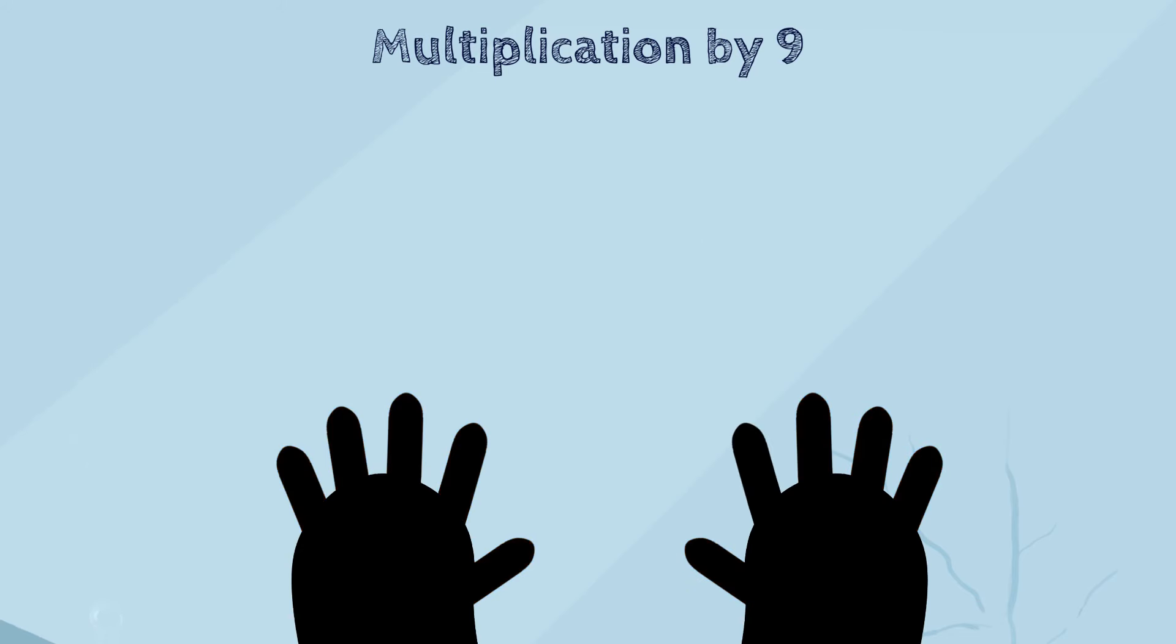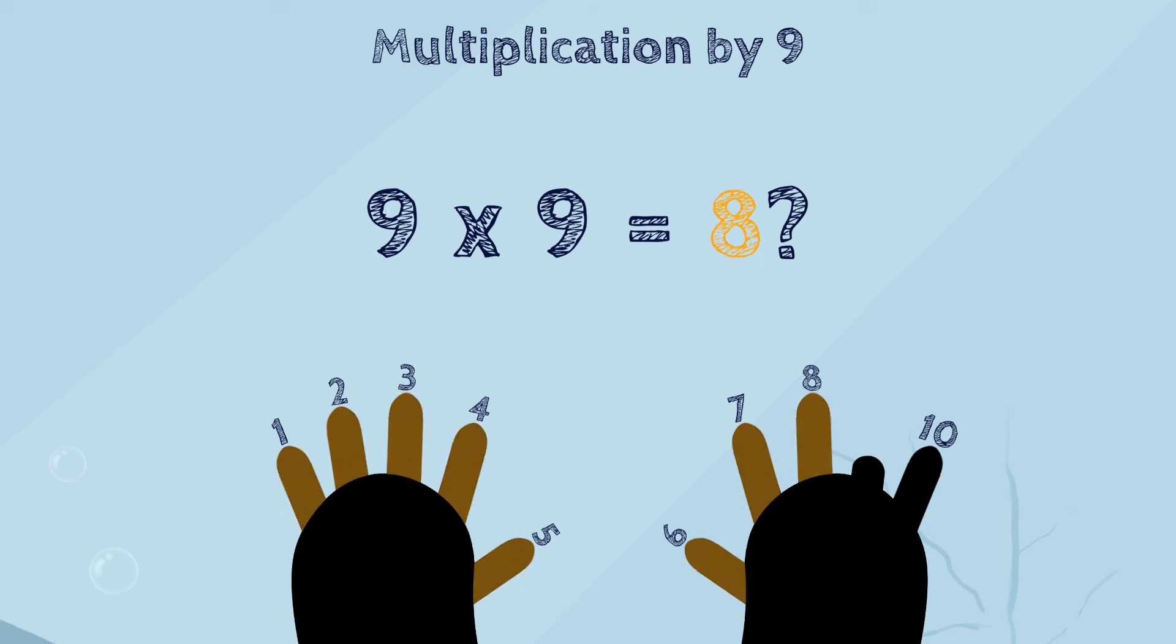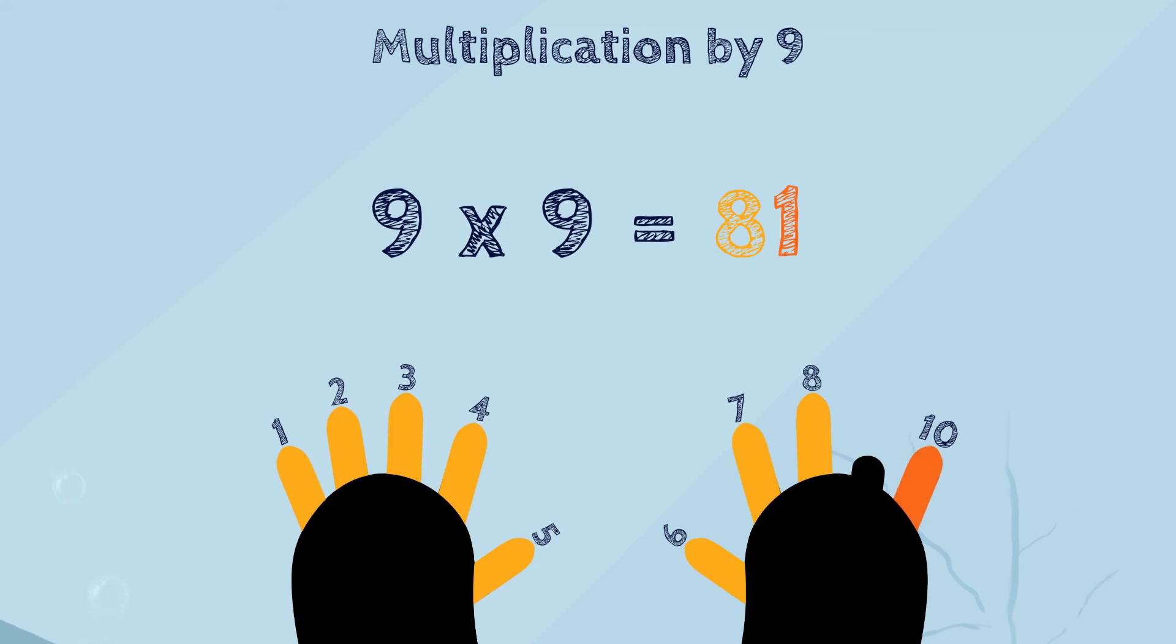Let's try another example. 9 multiplied by 9. We fold down the 9th finger and count the fingers to the left, and then to the right of the folded finger. It will be 8 fingers to the left, and 1 finger to the right. So, the answer is 81.